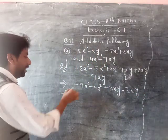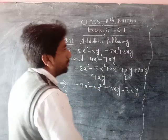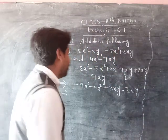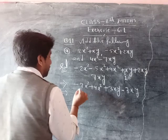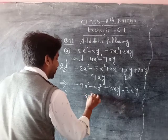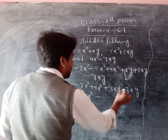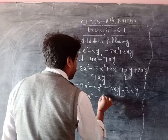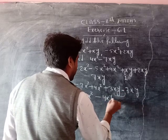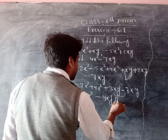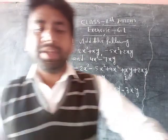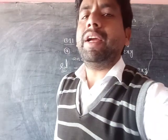Here, minus plus minus — take the sign of the greater value — means minus 3x square, plus minus minus minus 4xy. Clear, right? Yes, this is our answer.